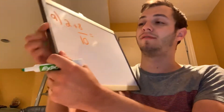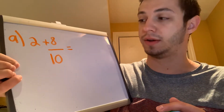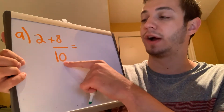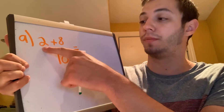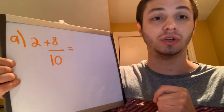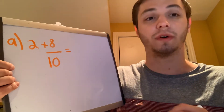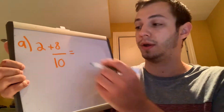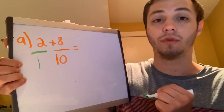In part A we have the mixed number 2 plus 8 over 10. We have a whole number and we're trying to add it to a fraction. We have to remember that we cannot add a whole number with a fraction. In order to add we need to have two fractions, so our first step will be to change this 2 into a fraction. Remember each whole number is over the number 1, so I'm going to put the 2 over 1.